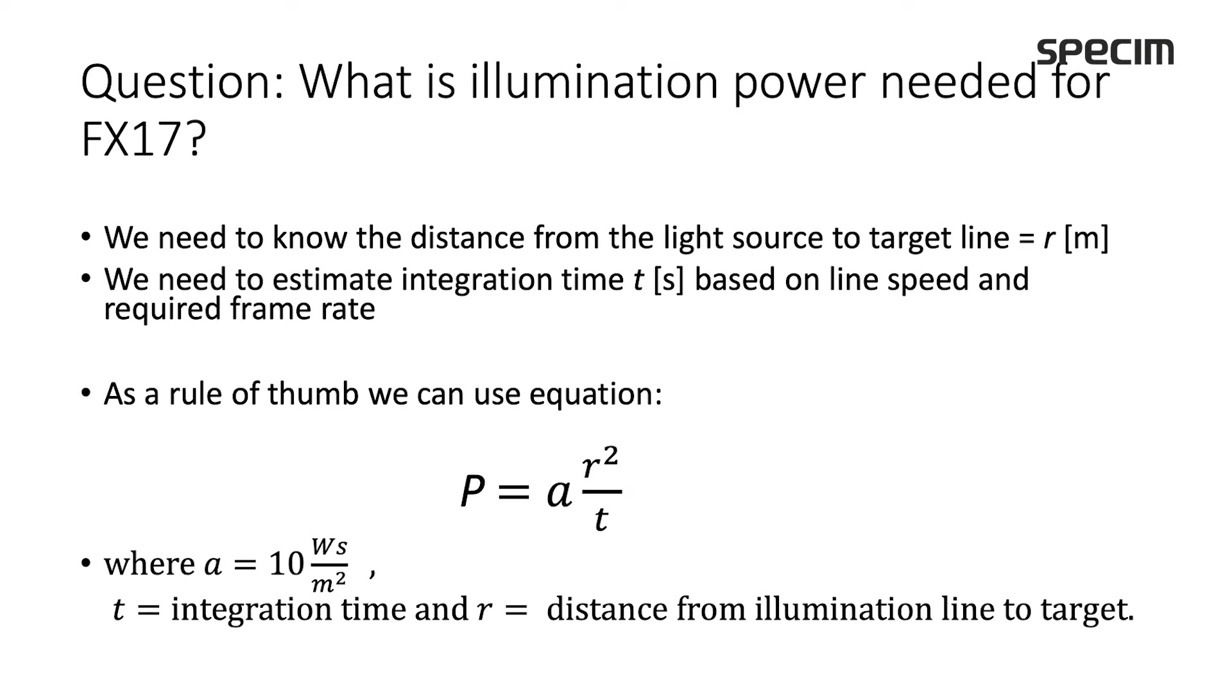We have power is a constant times R squared divided by integration time. In this, the constant is 10 watt second divided by square meter, and t is integration time that is used, and R is the distance from illumination line to the target. To explain this a little bit more, I have two examples.